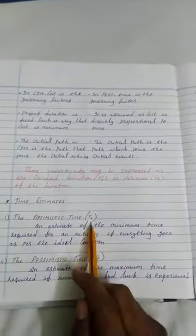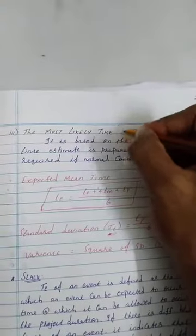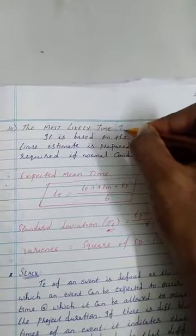It is having three different times there. The optimistic time, which is normally called as T0. The pessimistic time, which is normally called as TP. And most likelihood time, this is called as TM, most likely time.